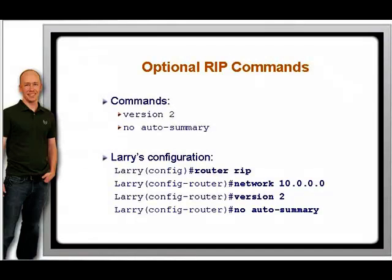Although RIP Version 2 does support classless routing, it still automatically summarizes all networks on the default Class A, B, and C boundaries. In our previous example, RIP Version 2 still summarizes the networks at the major 10.0.0.0/8 boundary. Slash 8 is the default mask for a Class A network. To disable automatic summarization, enter the No Auto Summary command under the routing process. This is the complete configuration for Larry's router, assuming that you wanted RIP Version 2 with no automatic summarization. Note that even though we disabled automatic summarization, we still put the default Class A networks in our configuration. RIP is smart enough to go on the interfaces and discover the individual subnetworks and their associated subnet masks.